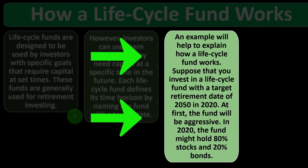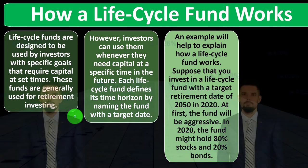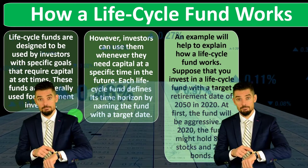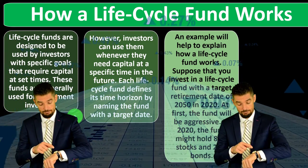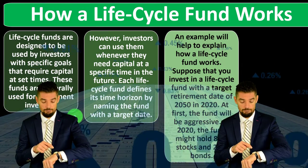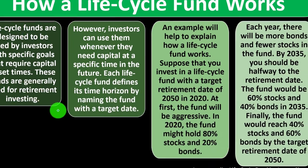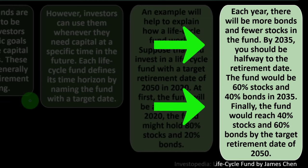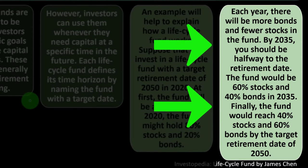Each life cycle fund defines its time horizon by naming the fund with a target date. An example will help explain how a life cycle fund works. Suppose you invest in a life cycle fund with a target retirement date of 2050, starting in 2020. At first the fund will be aggressive — in 2020 the fund might hold 80% stocks and 20% bonds, because stocks are expected to have more volatility but higher returns, so you want to be more heavily weighted in stocks with a longer time horizon.